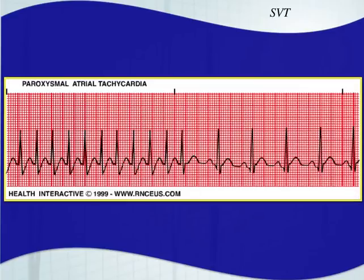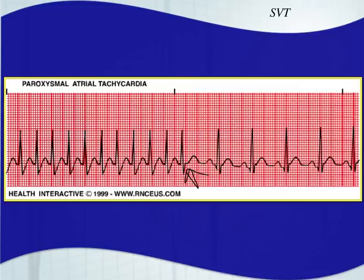The word paroxysmal means it comes and goes. Sometimes you'll hear PSVT — paroxysmal supraventricular tachycardia — meaning it waxes and wanes, coming and going, breaking on its own without treatment. For PSVT, adenosine would not be the treatment of choice. You'd want something more long-lasting like cardizem because the re-entry is already breaking on its own. Adenosine is very short-lasting, so you need a more long-acting negative chronotrope.